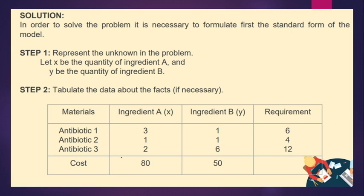In the solution, to solve the problem it is necessary to formulate first the standard form of the model. Step 1: Represent the unknown in the problem. Let x be the quantity of ingredient A and let y be the quantity of ingredient B. So in the table, antibiotic 1 with ingredient A is 80 pesos, ingredient B is 50 pesos, and the requirements are 6, 4, and 12.